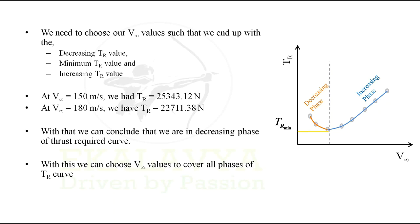With this, we can choose V∞ values to cover all phases of thrust required, that is the decreasing phase and the increasing phase. The minimum thrust required usually falls between these two and later can be found out using the graphical method.